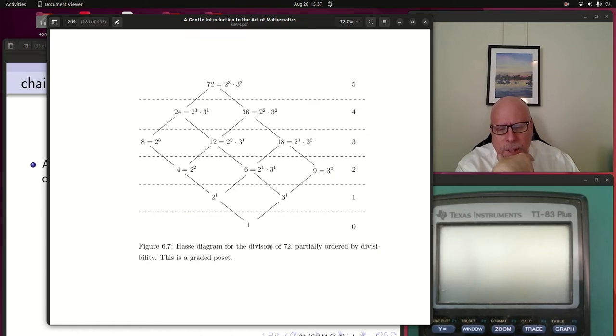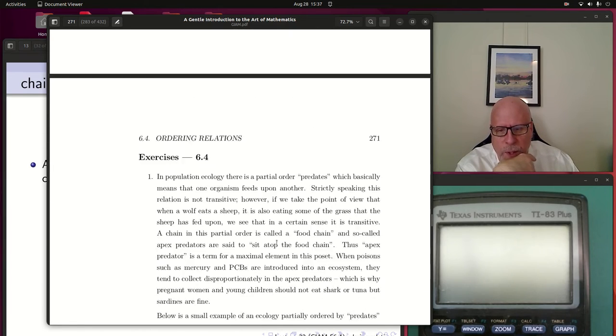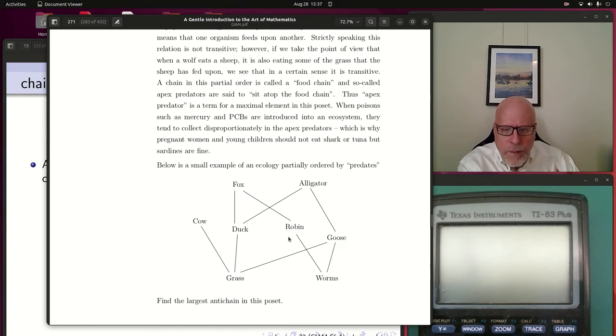Now we have all this terminology to learn. First off is chains. Chains are really an important idea in posets. A chain in a poset is a subset of the elements, all of which are comparable. If we look at the predation example, a chain, for instance, would be the path that goes from grass through duck up to alligator.